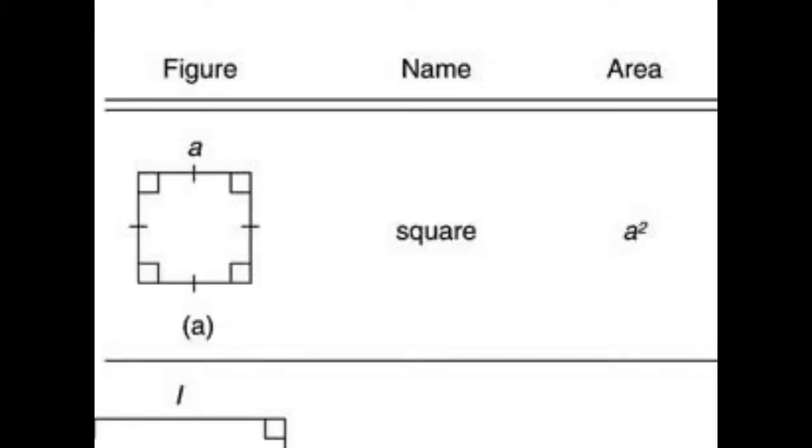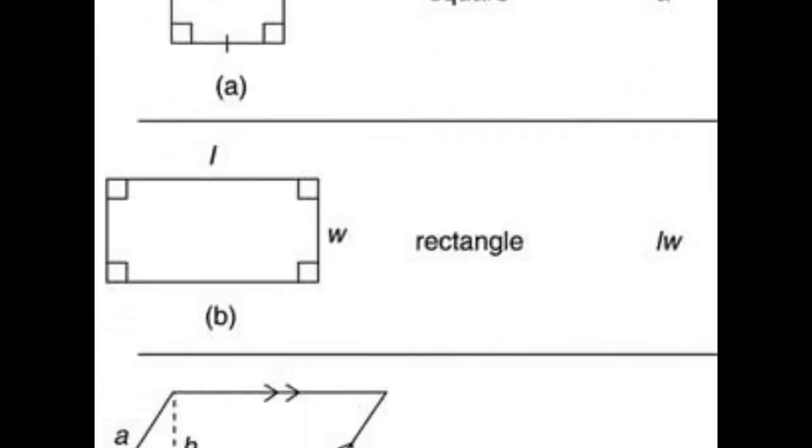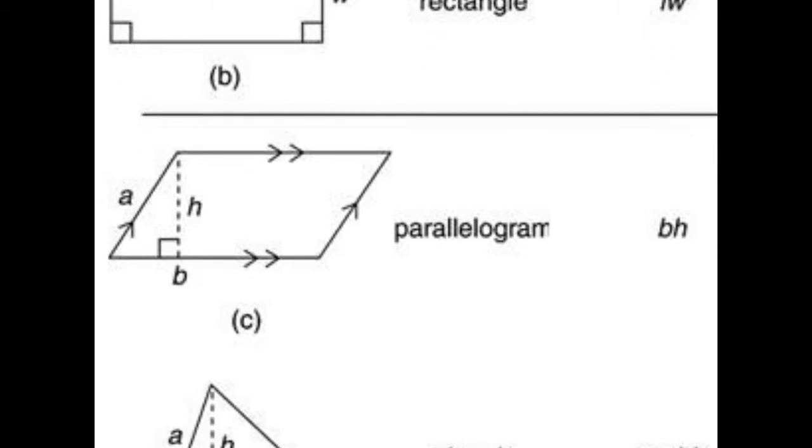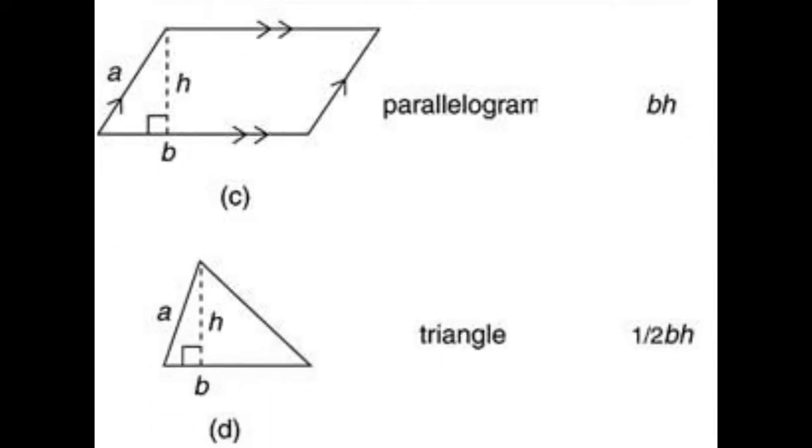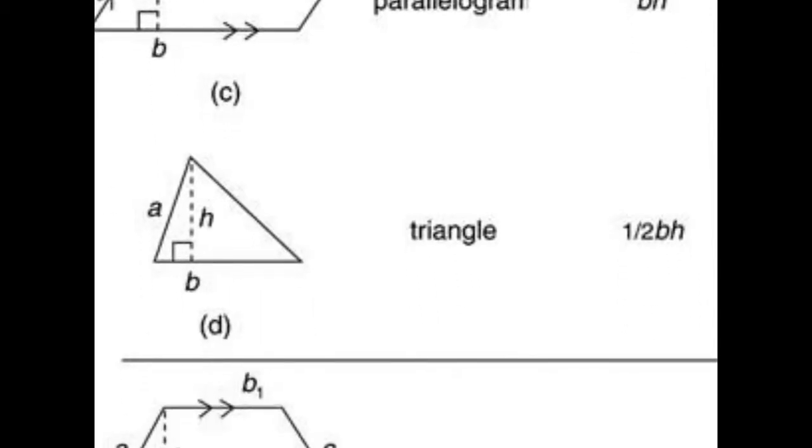Area, area, area, area. Area of a square is A times A while rectangle is length times width. Parallelogram is B times H where B is base and H is height. Area of triangle is half B and H.